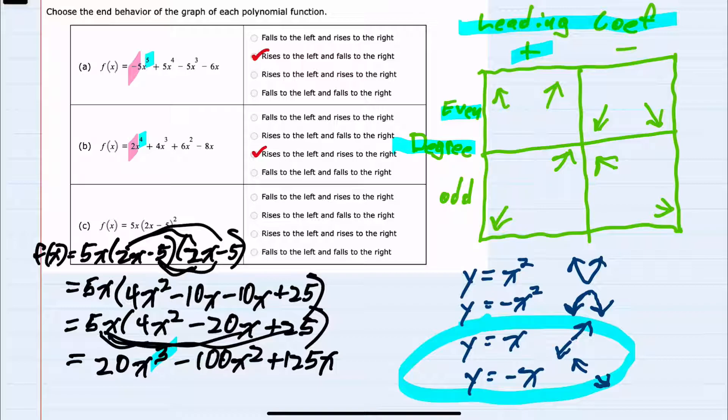And we have a positive leading coefficient. So it's going to be the top example here where on the ends, it goes down to the left and then rises to the right. So falling to the left and rising to the right.